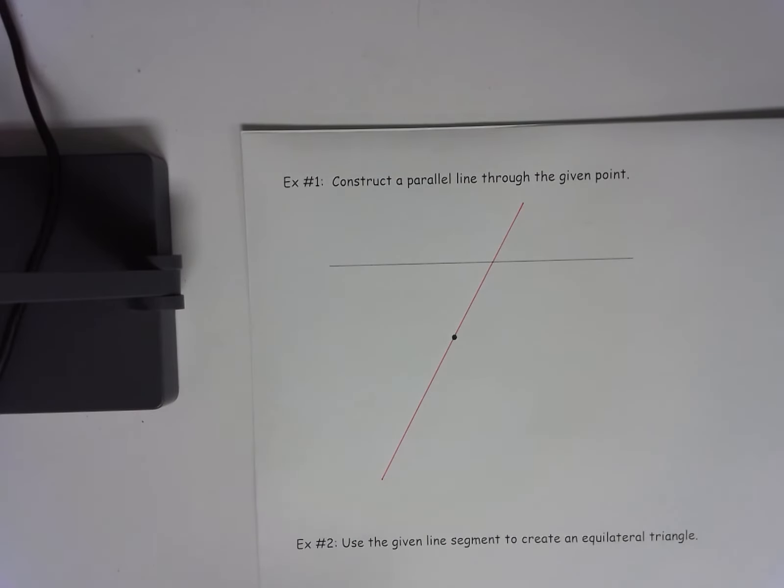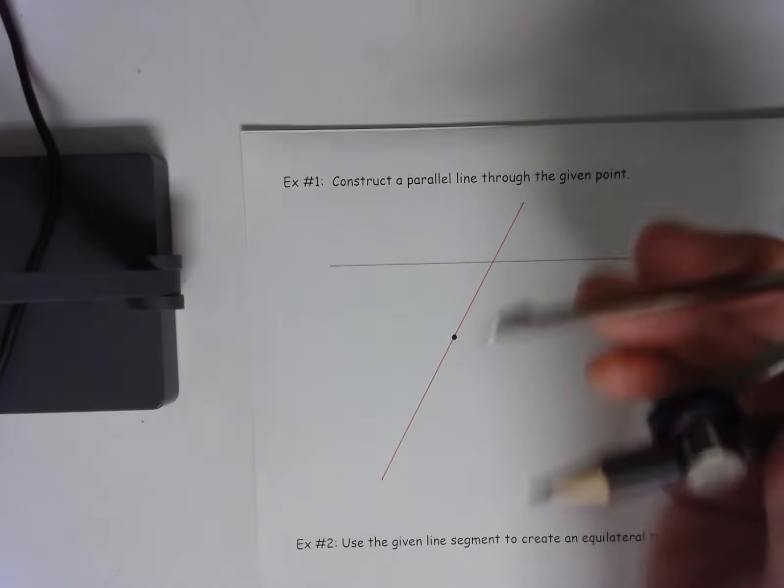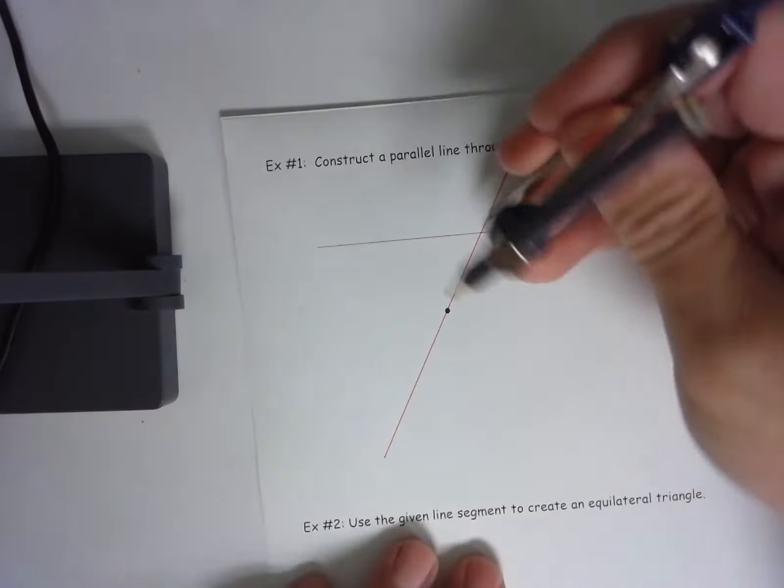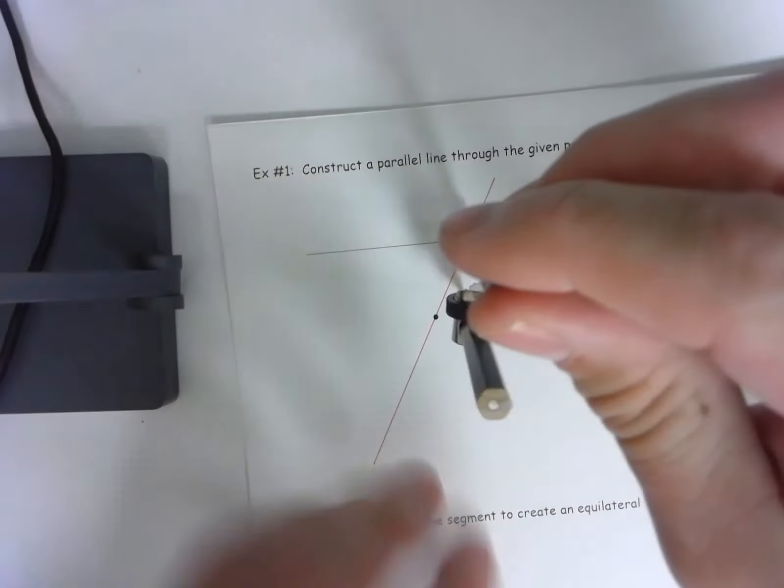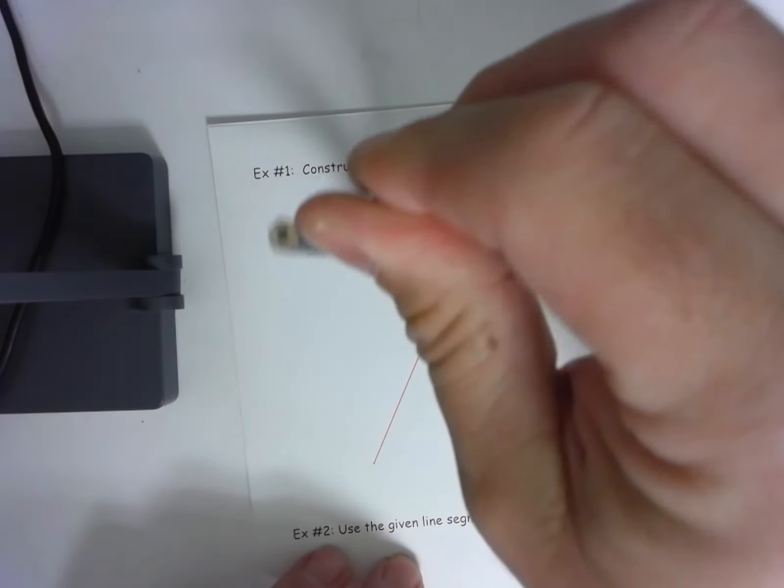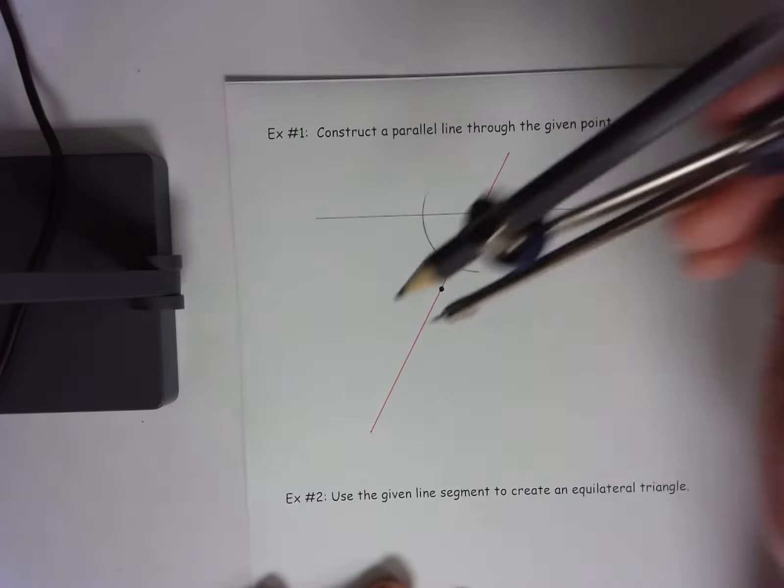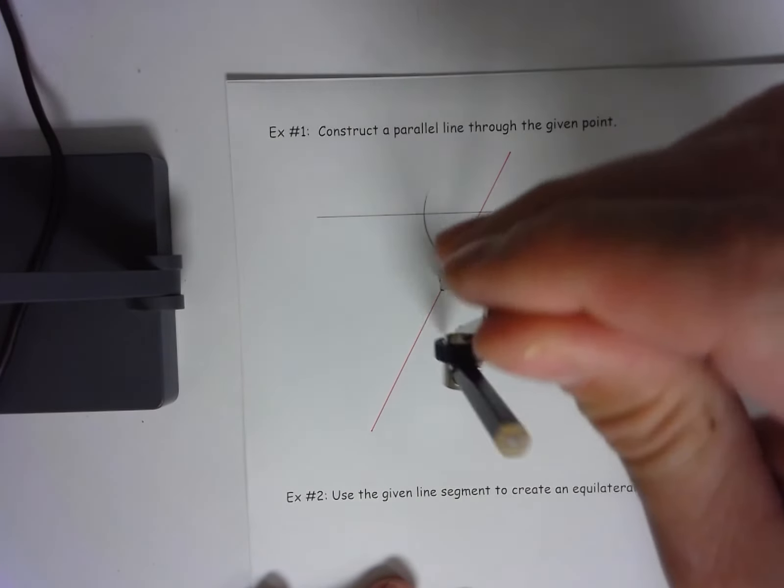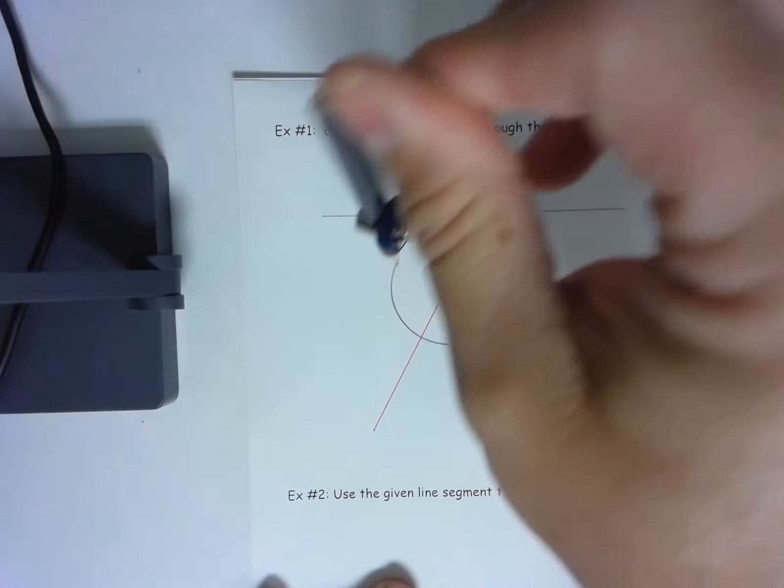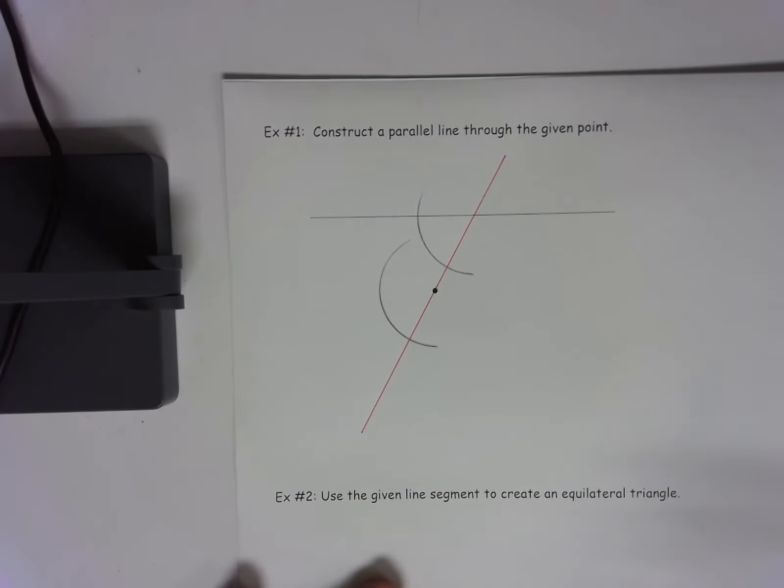Take your compass, put it right at the vertex, the new vertex I've formed, and I'm going to swing myself an arc. Without changing the span, I will now go to the point and I'll swing myself a pretty good size arc because I want to make sure I can get there.